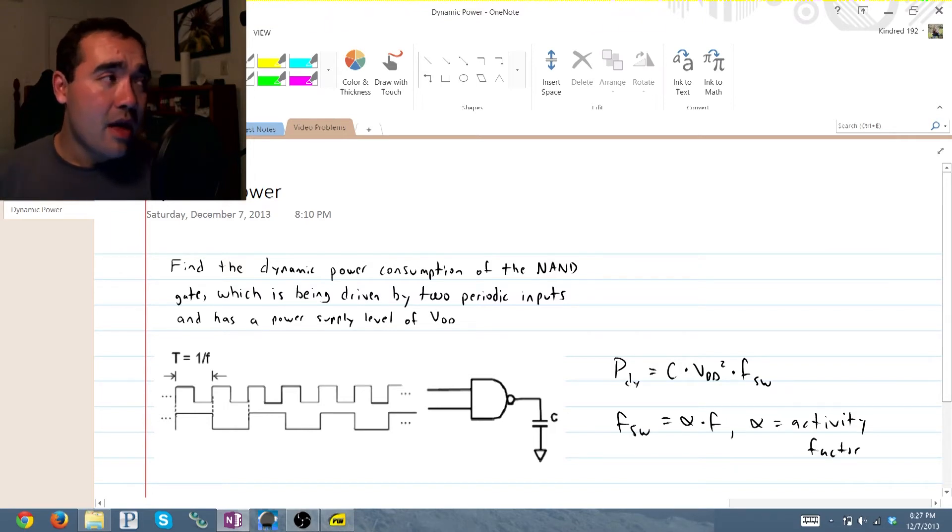And there are tables and there are ways of deriving what the activity factor is, but all we have to know for this is that if the number of switches per period is equal to 2, then our activity factor would be one half. And the same is true if our switches per period is equal to 0.